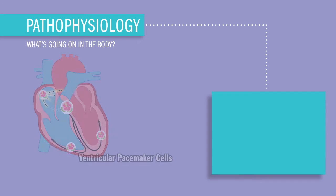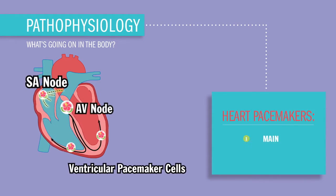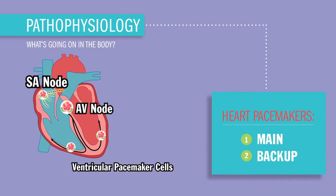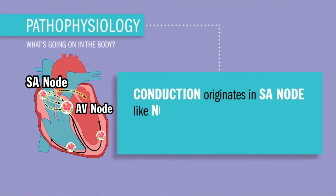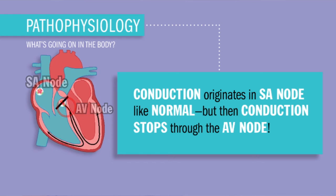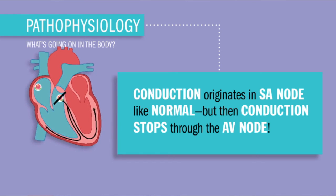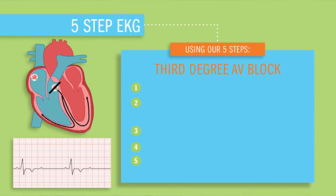So what's really going on in the body? As you guys know, the heart has one main pacemaker and two backup pacemakers. In this case, conduction originates in the SA node like normal, but then conduction stops through the AV node — in essence, it's completely blocked. Using our five steps, let's interpret this EKG.